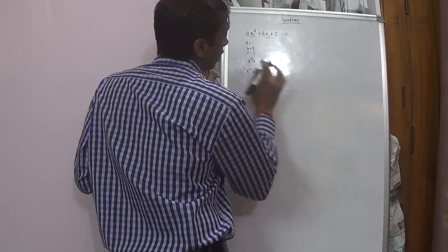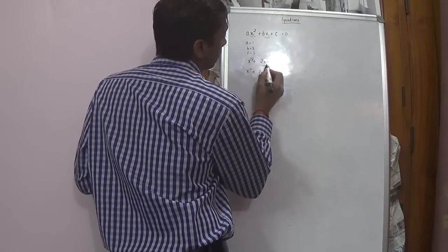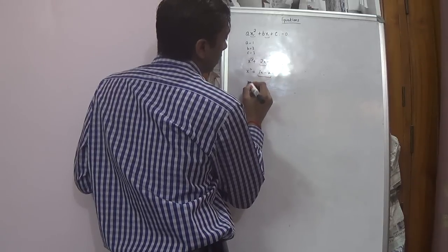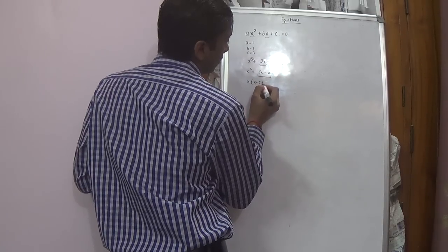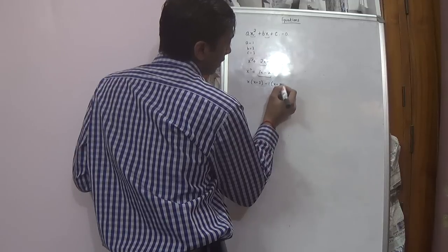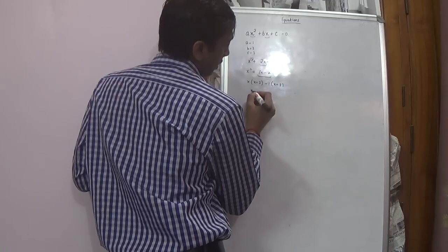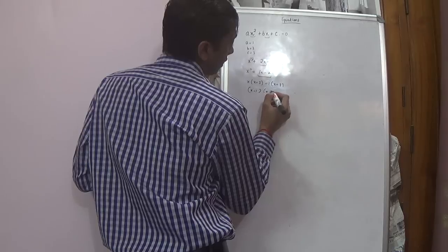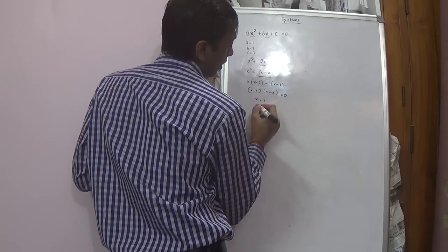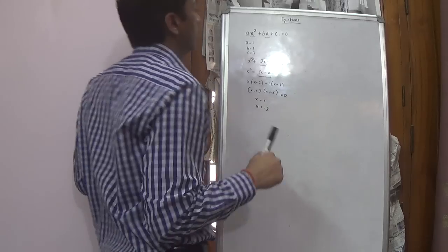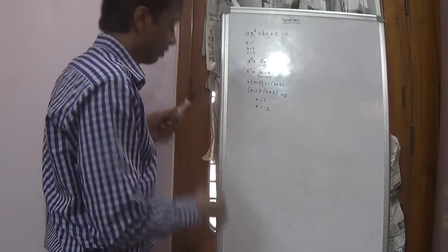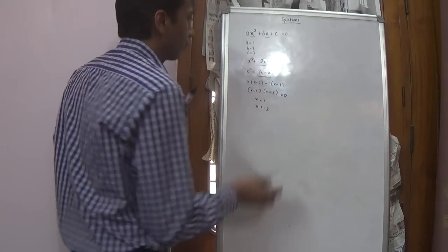So we write x squared plus 3x minus x minus 3, taking x common: x(x plus 3) minus 1(x plus 3), giving (x minus 1)(x plus 3) equals 0. So x is equal to 1 and x is equal to minus 3. This is the second way of solving this type of equation.